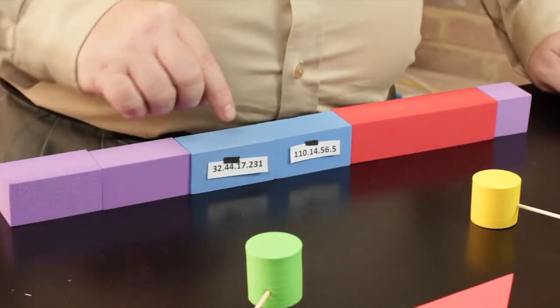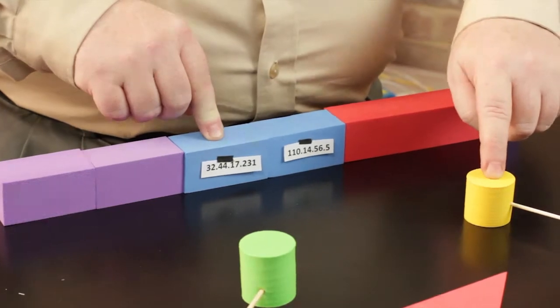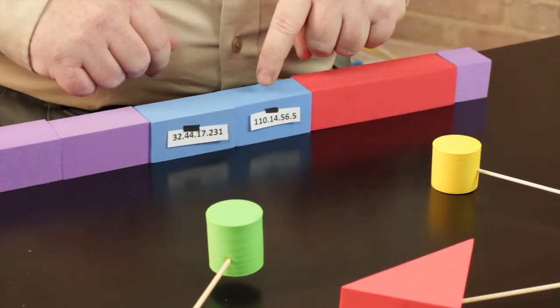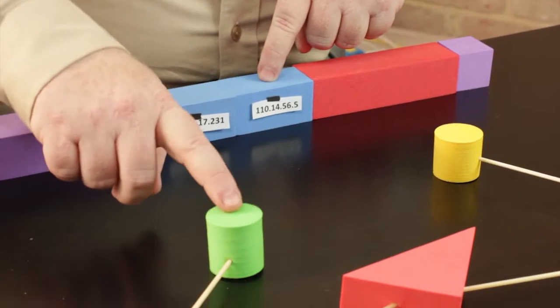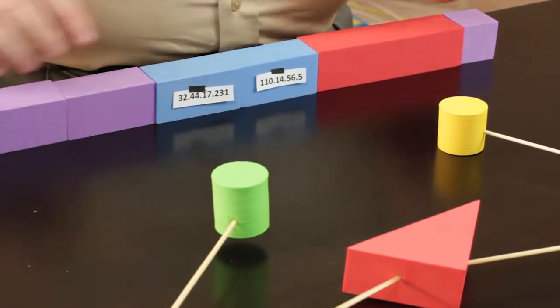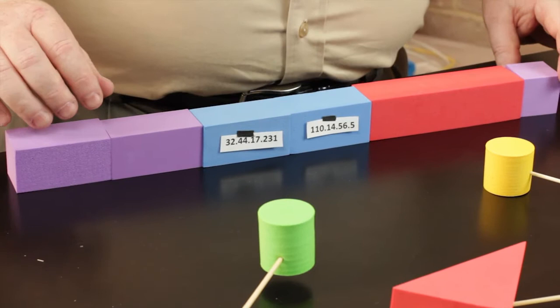What we're putting in is the IP address of this computer right here - this is the destination IP address - as well as the source IP address which is the IP address of the sending system. So we have something that looks kind of like this.